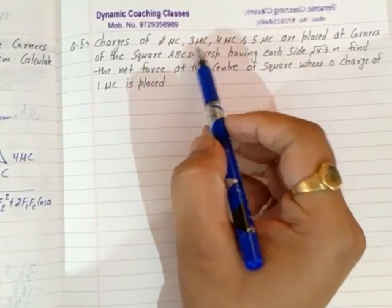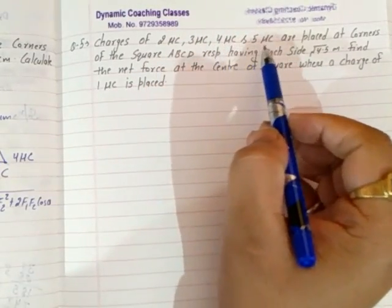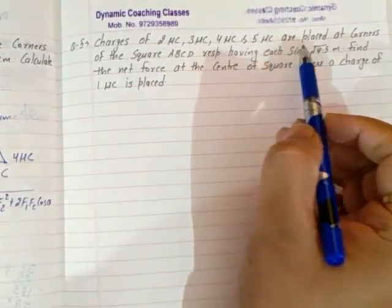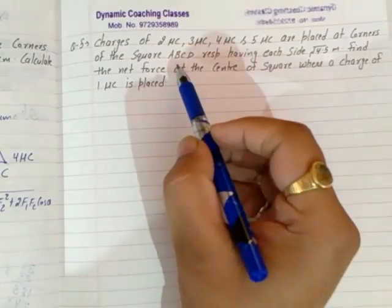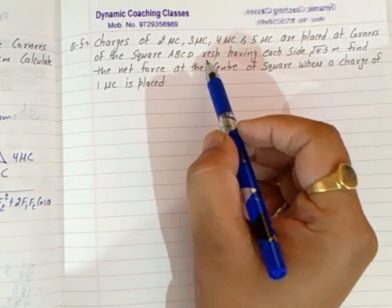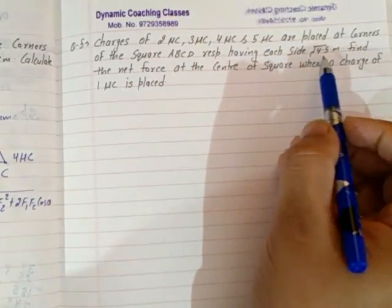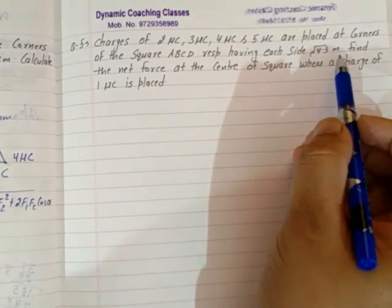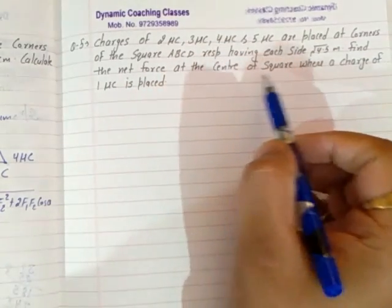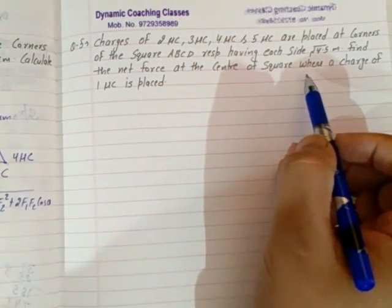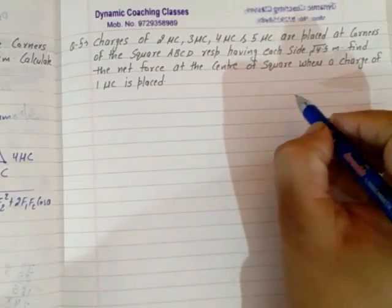The charges of two microcoulomb, three microcoulomb, four microcoulomb, and five microcoulomb are placed at the corners of the square ABCD respectively. Each side is root 4.5 meters. Find the net force at the center of the square where a charge of one microcoulomb is placed.